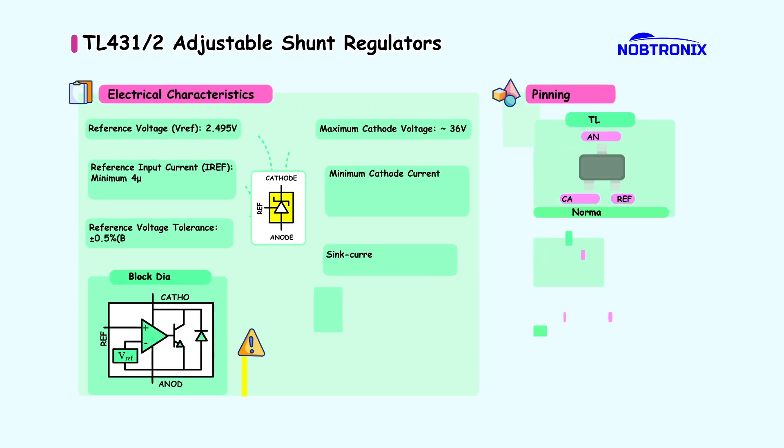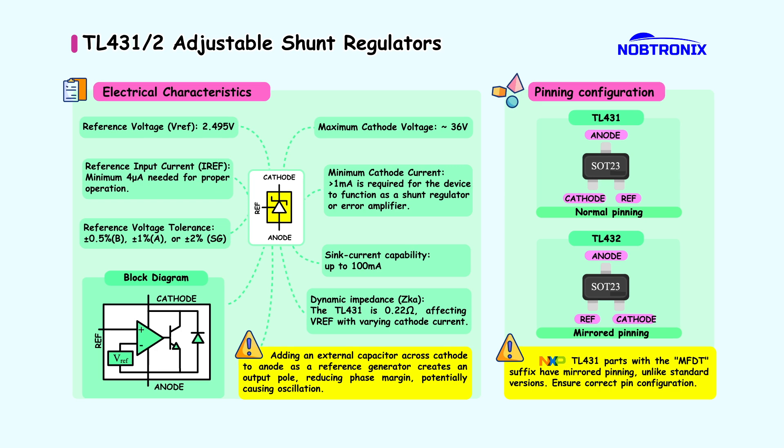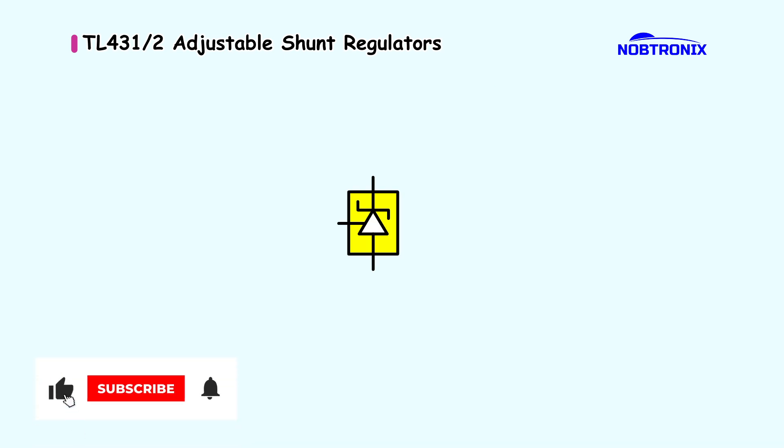Welcome to our video on the TL431, an adjustable shunt regulator. The TL431 is a three-terminal adjustable shunt voltage regulator with three pins: cathode, anode, and reference.